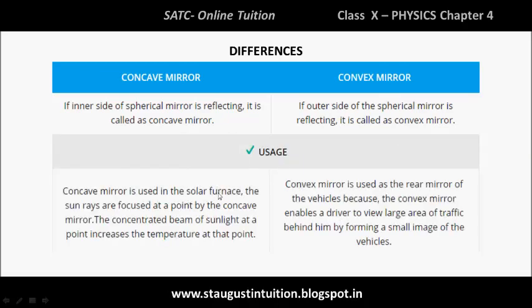For example, the concave mirror is used in solar furnaces. The sun's rays are focused to a point by the concave mirror, using its convergence property. The concentrated beam of sunlight increases the temperature at that focal point. The convex mirror is used as a rear-view mirror of vehicles because it enables a driver to view a large area of traffic behind by forming a small image.